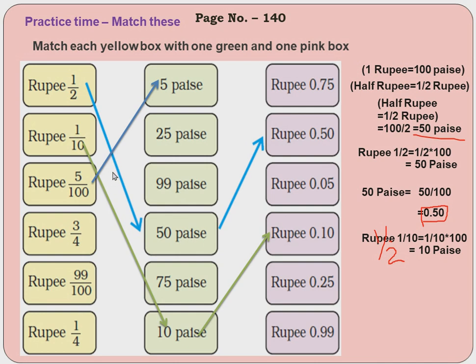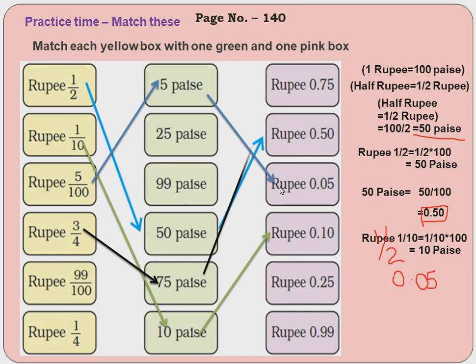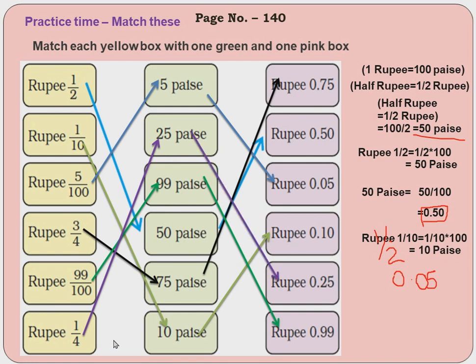Next: 5/100 means 5 paisa. Multiply by 100 — the 100 cancels — you get 5 paisa. Converting 5 paisa to rupees: 0.05 rupees. When there is only one digit, keep one more zero in front, so 0.05. Next, 3/4 means 75 paisa, and 75 paisa converted to rupee is 0.75. Then 99/100 is 99 paisa, which is 0.99 rupee. Last, 1/4 of a rupee means 25 paisa, which equals 0.25 rupee.